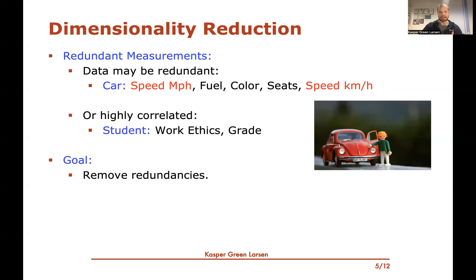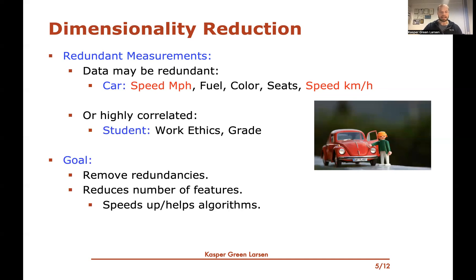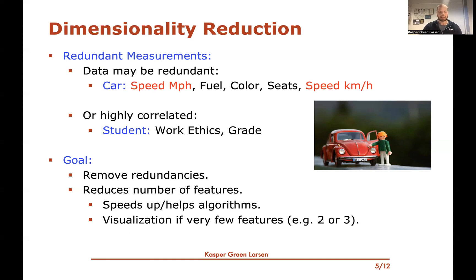PCA can also be thought of as finding the most important combinations of features, but we'll take the point of view of removing redundancies. Reducing the number of features is beneficial because many learning algorithms' running time depends on the number of features, so this speeds up algorithms and reduces memory consumption. If you can reduce the number of features all the way down to two or three, you could even use this for visualization — you can plot the data and look at it. It could also be used to remove noise if some features are very noisy.